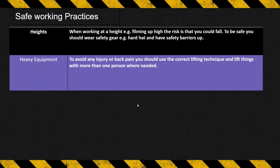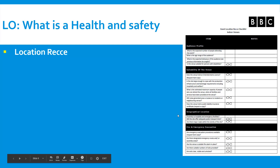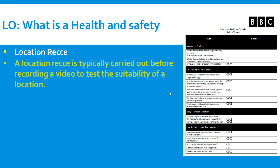Other safe working practices include working at heights — for example, changing a light bulb or putting something on a wall. You should wear safety gear such as a hard hat and have safety barriers in place. When working with heavy equipment such as heavy boxes, use correct lifting techniques — go to your knees and lift the box up rather than bending from the back, to avoid back injury.